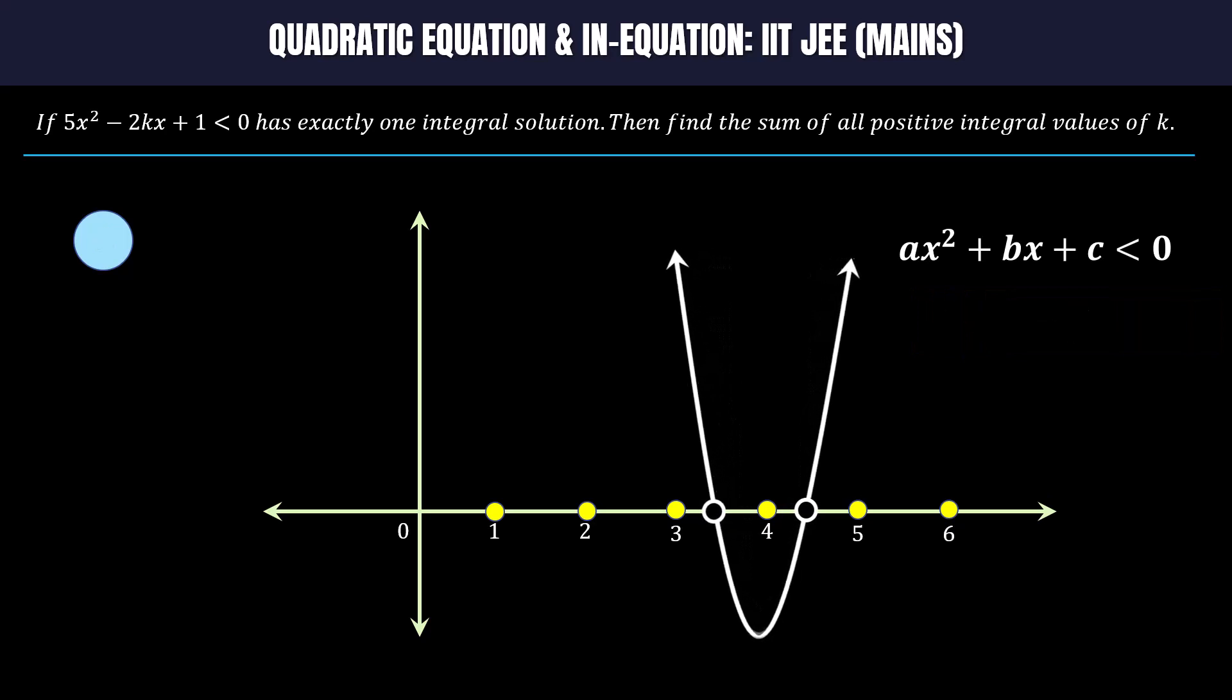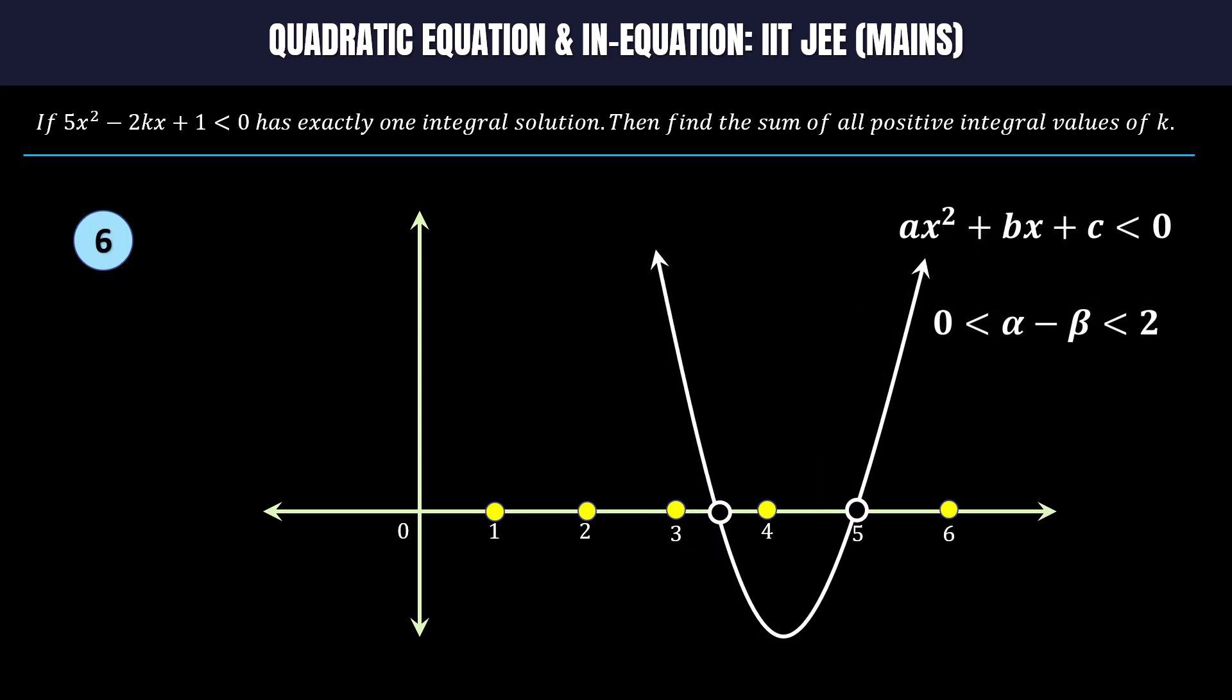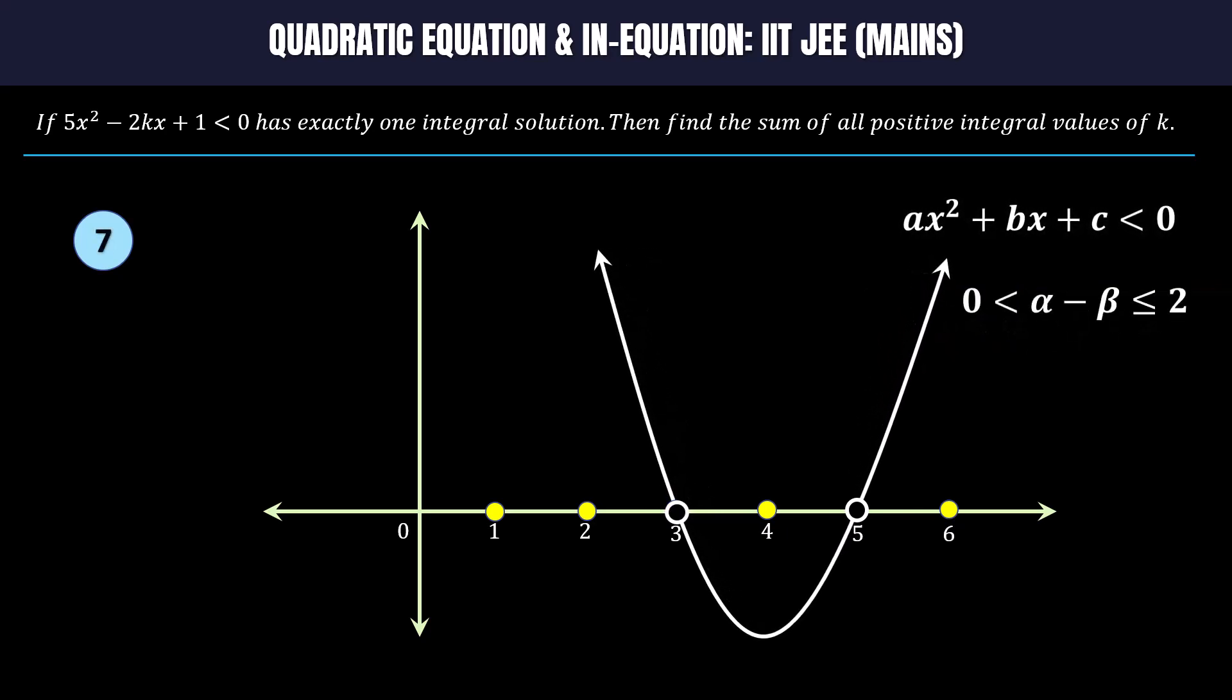Suppose one of the two roots is an integer, which is shown in graphs 5 and 6. Then for unique integer solution of the given inequality, α - β should be greater than 0 and less than 2. In case both roots are integers and only one integer is lying between them, then α - β equals 2.